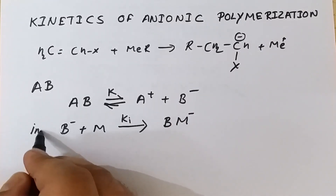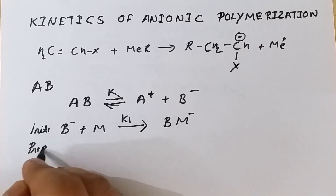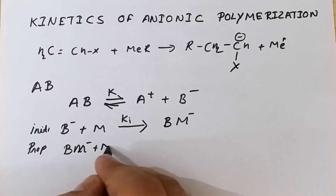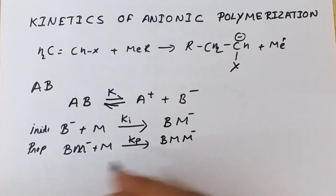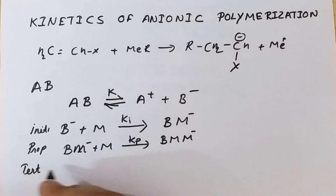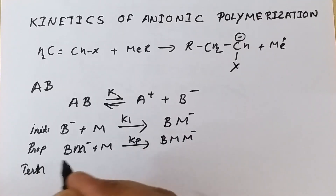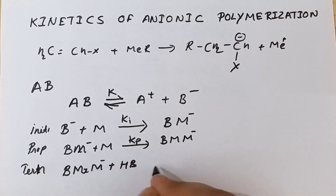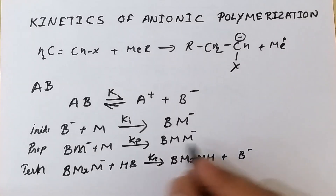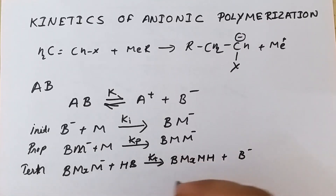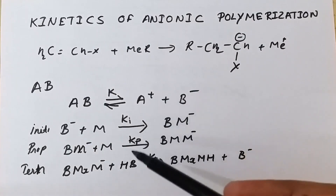This is the initiation step. Then comes the propagation step, wherein the active center reacts with several monomers and propagation of the chain takes place, giving BM⁻ and the propagation continues. After propagation comes the termination step. In the termination step, the active center is lost via a proton donating agent HB, giving rate of termination kₜ equal to [M⁻][HB], terminating the chain.